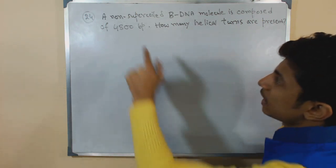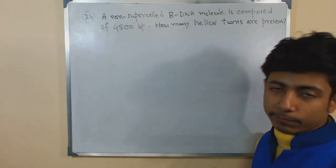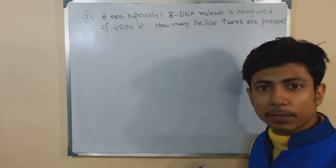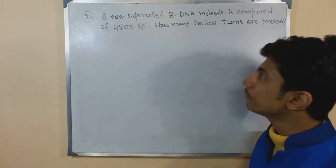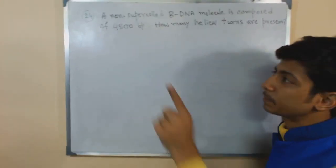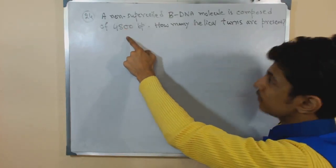Important facts are: a non-supercoiled B-DNA, definitely the B-DNA is not supercoiled, that means it will consist of its general property of base pairs per turn and is composed of 4800 base pairs. So the number of base pairs are provided, that is 4800.